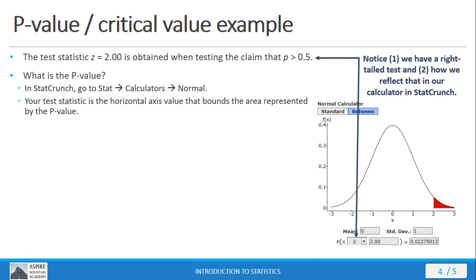There in my StatCrunch calculator, okay? So, I put that in, hit compute, and out comes the actual p-value. So, the test statistic there on the left, then my p-value comes out on the right. That's the area here in the curve on the right tail. We have a right-tailed test, as shown here.